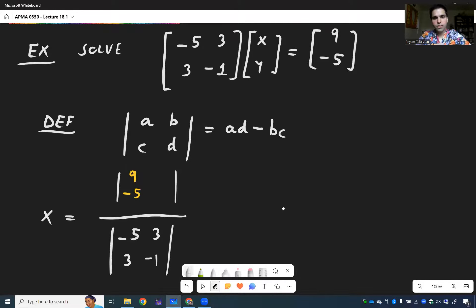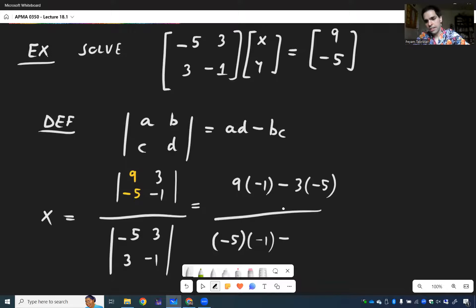And then you use the formula above. So ad - bc. So 9 times -1 minus 3 times -5 divided by -5 times -1 minus 3 times 3. If you do that, you get -9 + 15, which is 6. 5 - 9, which is -4. So you get directly -3/2.